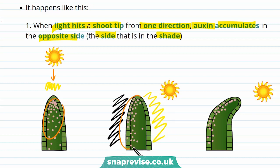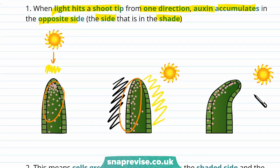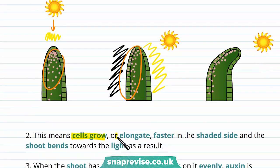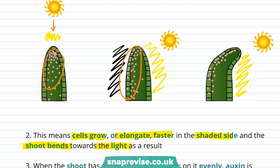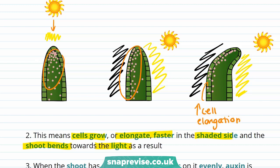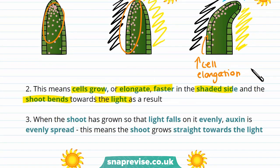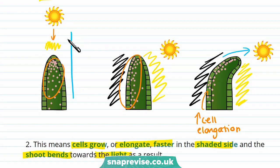The shaded side is where auxin accumulates, and this causes cell elongation. With auxin mostly on one side of the plant, cells grow or elongate faster on the shaded side, and the shoot bends towards the light as a result. On the side with light, there's not much auxin and not much elongation. On the shaded side, there's lots of auxin and lots of cell elongation, causing the shoot to bend towards the light. This doesn't happen when the shoot is grown so that light falls on it evenly, as auxin is evenly spread, and the plant grows straight upwards.